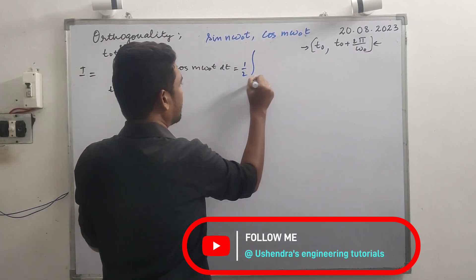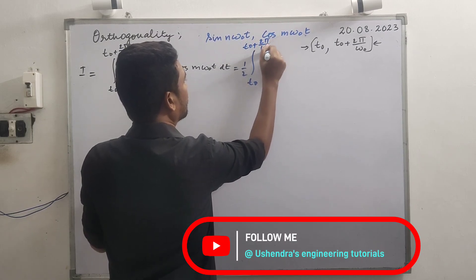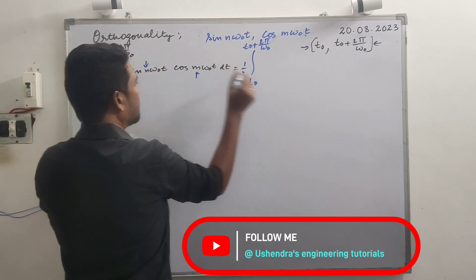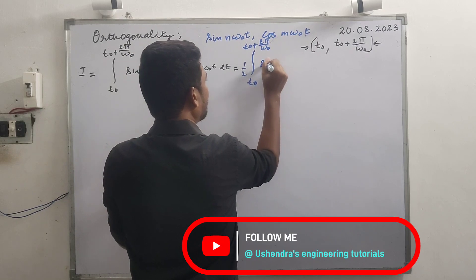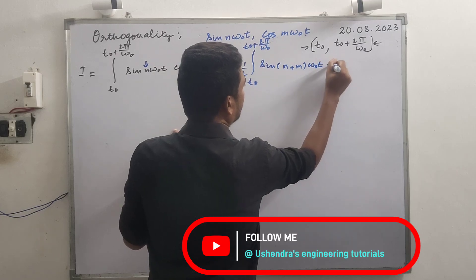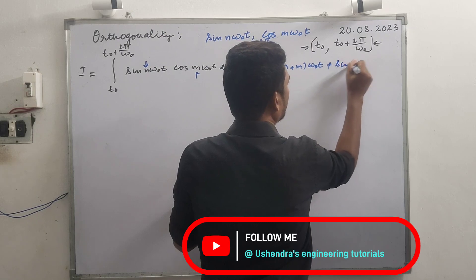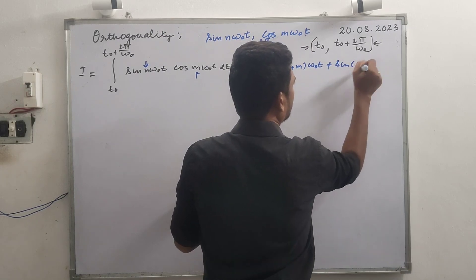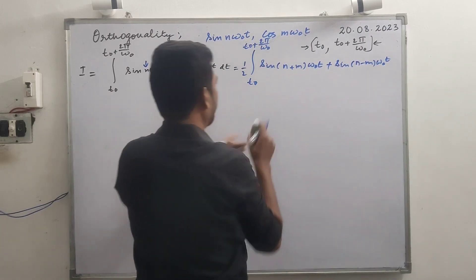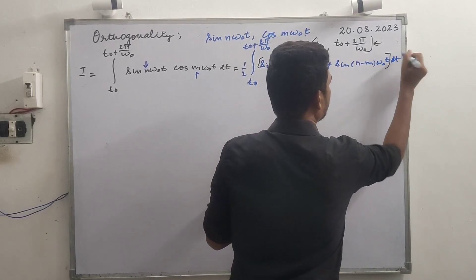So we have half times the integral from t₀ to t₀ plus 2π/ω₀ of [sin(a+b)] where n will be a and m will be b, giving sin((n+m)ω₀t) plus sin((n−m)ω₀t), all inside the braces, dt.